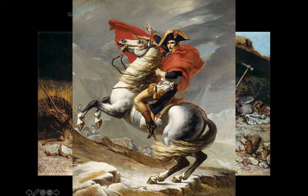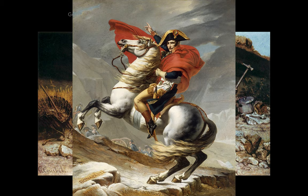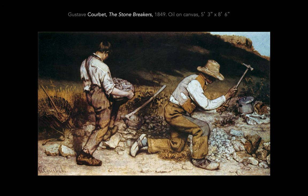Napoleon was famously short — look how big he is. That horse is like a tiny horse — it's not to scale. Horses are big creatures. This is totally tiny, of course to make Napoleon look bigger, stronger, and more powerful in this scene of war. But this is what large-scale paintings would be reserved for. So for an artist like Courbet to come along and have this large canvas filled with two of the lowest workers in society — stonebreakers — was quite radical.